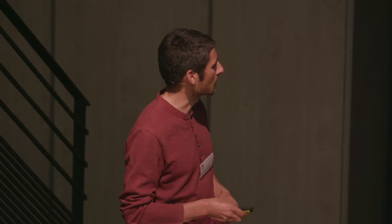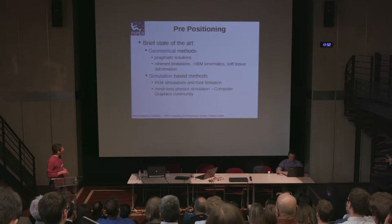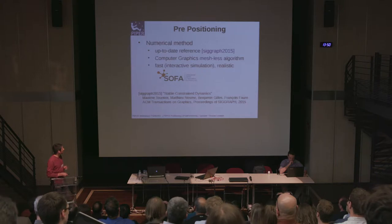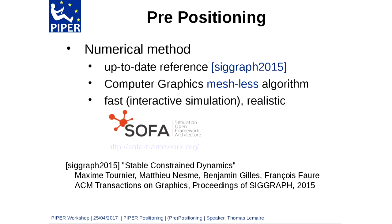We will concentrate on the solution implemented in these modules: meshless physics. Meshless means you don't have elements and nodes for computation; rather, other parameters are used. This kind of method comes from the computer graphics community. The numerical method we are using is described in a recent publication — a computer graphics meshless algorithm published at a computer graphics conference — and it is based on the SOFA framework, an open source library for this kind of simulation.